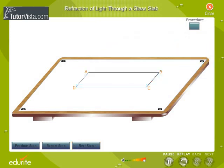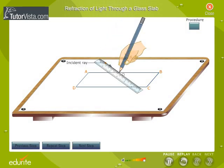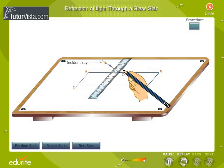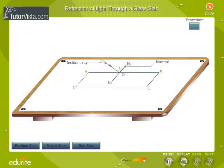Remove the glass slab. Draw I.O. to represent the incident ray. Draw the normal N1, N2 at the point of incidence O.